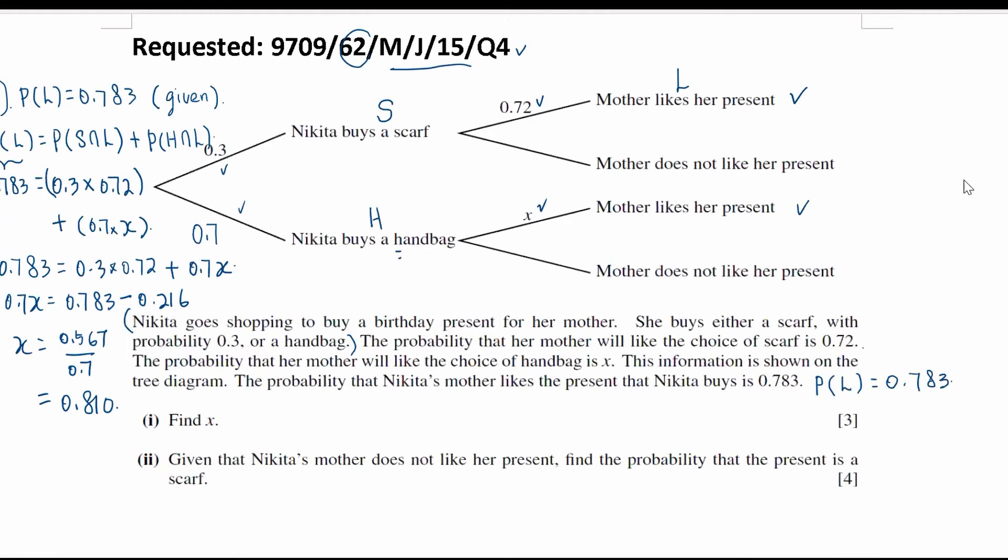Now, we look at part 2. When the question uses the word given, that means we are talking about conditional probability. Given that Nikita's mother does not like her present, so we use capital L prime to represent it, find the probability that the present is a scarf.